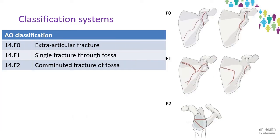The basics of the AO system are F0, F1, and F2 depending on whether the fracture is extra-articular but destabilizing the fossa, a single fracture line through the glenoid fossa, or a comminuted fracture affecting the fossa. It does leave out assessment of the rest of the scapula seen in Eidelberg's system. However, a 2018 publication showed greater intra- and inter-observer reliability and a greater ability to classify fractures, with no unclassifiable patterns compared to approximately 25% unclassifiable under Eidelberg.